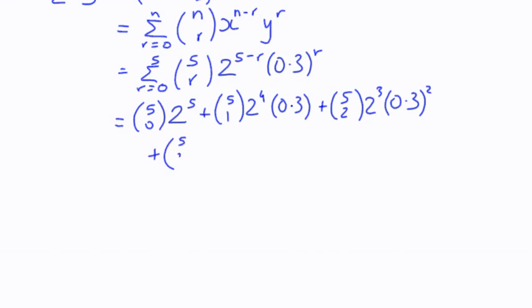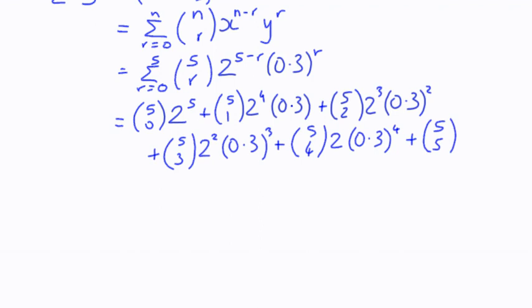Plus 5 choose 4 times 2 to the power 1 times 0.3 to the power 4. And finally, 5 choose 5, which is 2 to the power 0 equals 1, so we've got 0.3 to the power 5.